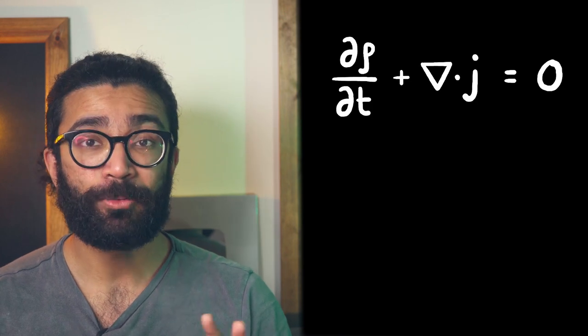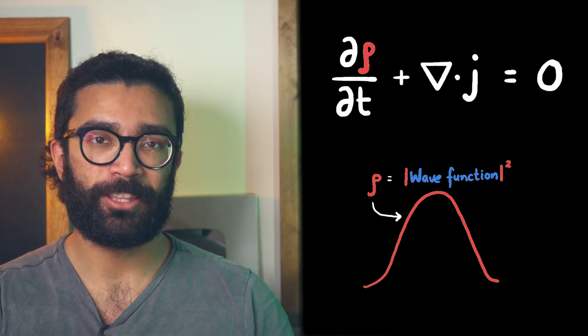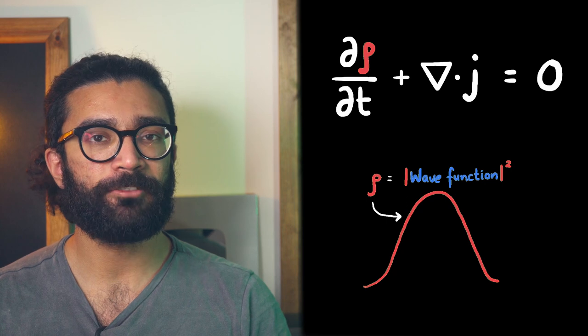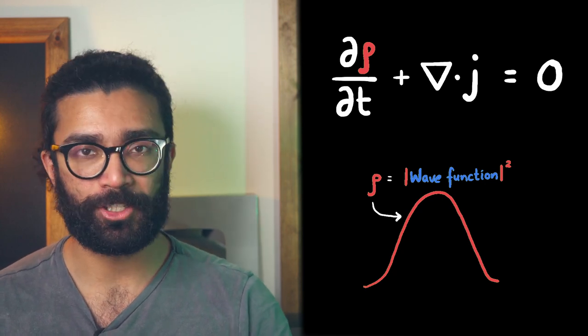Now let's get back to our topic at hand. With a bit of mathematical manipulation we can derive an equation that looks like this. Looks pretty intense but here's what the terms mean. Rho represents the square modulus of our wave function. The exact same thing we calculated earlier in order to find the probability of our particle being found in a particular region of space.